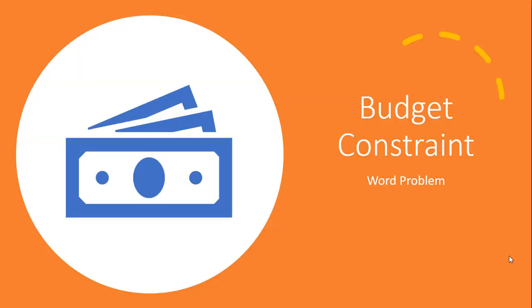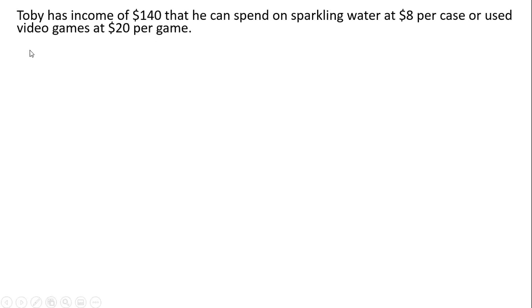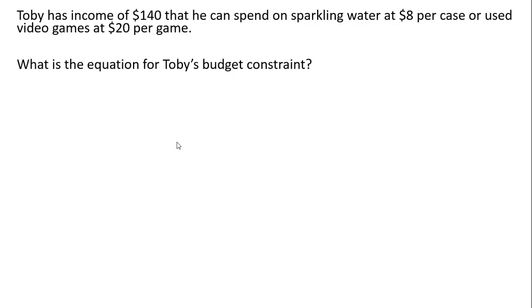Hello. In this video, we're going to look at the consumer's budget constraint by doing a word problem example. Toby has income of $140 that he can spend on sparkling water at $8 per case or used video games at $20 per game. What is the equation for his budget constraint?